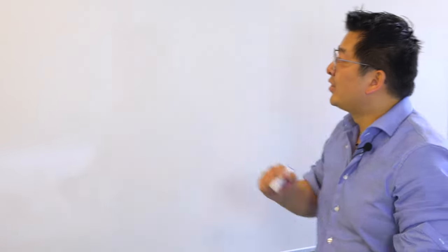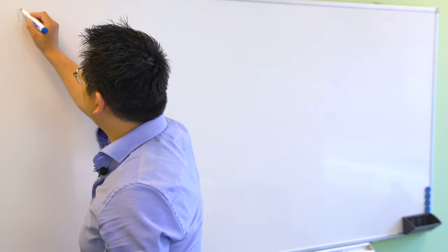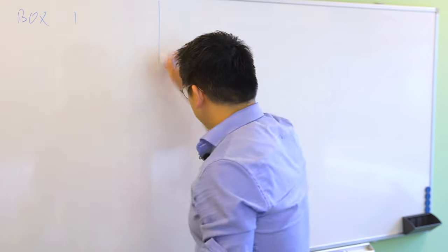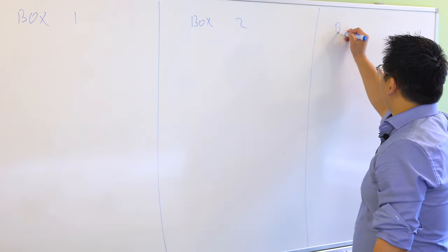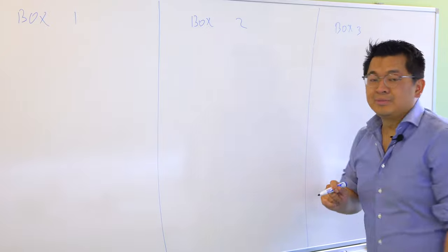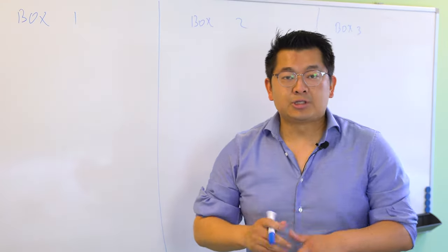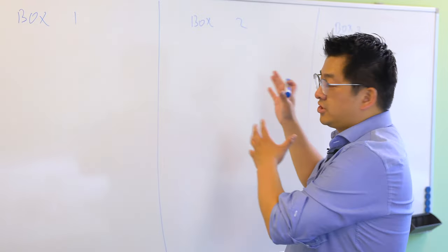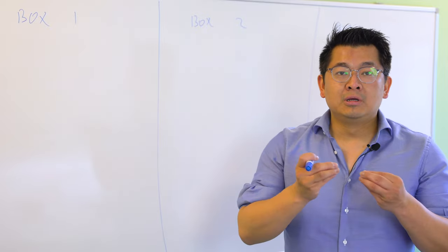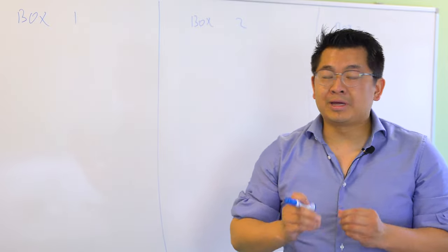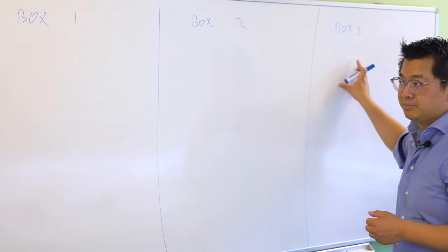To do that, let me distinguish three boxes. I'm going to write them out here for you right now: box one, box two, and box three. In the Netherlands we have a three box system. That basically means depending on the wealth or the income and where you're getting it from, that income will be classified in one of those three boxes.